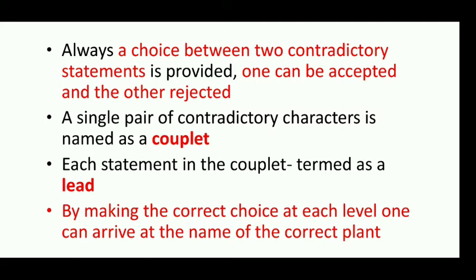A single pair of contradictory characters is named as a couplet, and each statement in a couplet is termed as a lead. Two leads together make one couplet — for example, 'plant has flowers' and 'plant does not have flowers' are two leads, and together they form one couplet. By making the correct choice at each level, one can arrive at the name of the correct plant. By following all the correct choices, one can easily name the unknown plant.